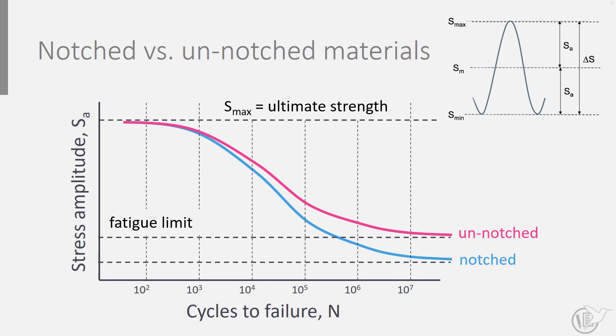The reduction of the fatigue limit can be calculated by taking the fatigue limit of unnotched material and divided by the stress concentration factor kT.